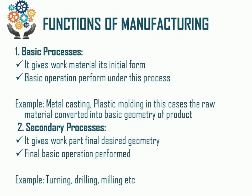The next topic of this Introduction to Automation Chapter is Basics of the Processes, to be explained in the Function of Manufacturing. Basic processes give work materials their initial form. Basic operations performed under these processes include, for example, Metal Casting and Plastic Moulding. The raw material is converted into the basic geometry and basic shape of the product.